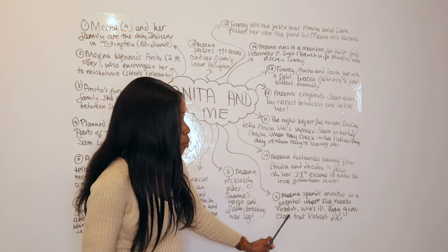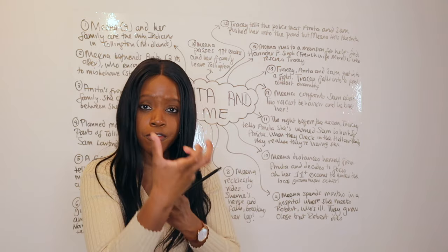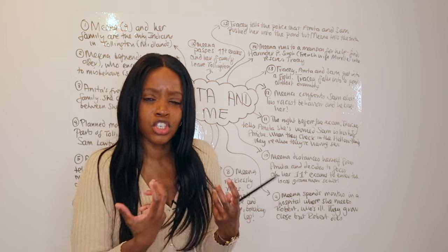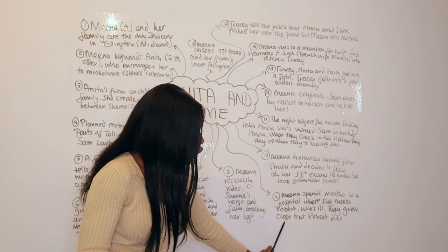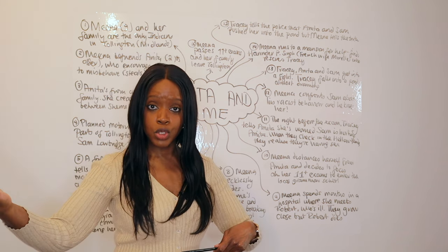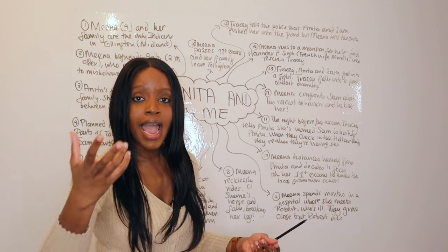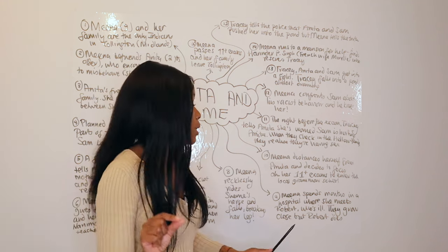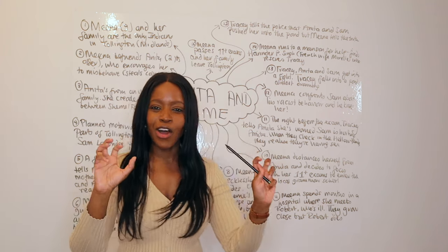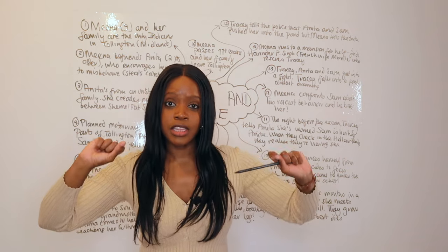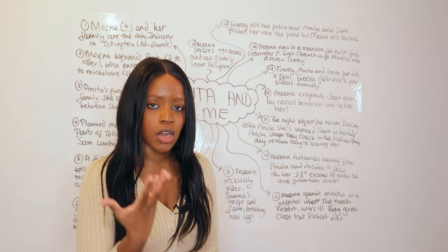In hospital, Mina meets another boy called Robert who is her age but seems extremely ill. They form a bond and he becomes her first boyfriend; she's really hopeful about having a relationship with him. However, once Mina gets well and leaves, Robert remains in hospital. They exchange letters, but one day Mina receives a final letter from his family informing her that Robert has died, which really devastates her. This chance at young love is destroyed and once more she is alone.